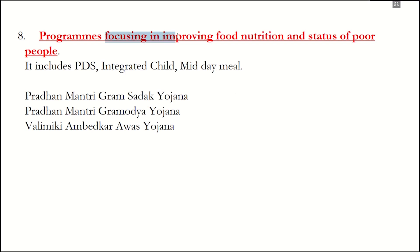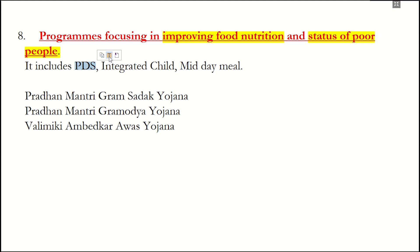There are also programs aimed at improving food, nutrition, and status of people. These include PDS (Public Distribution System), Integrated Child Development Services, and the Midday Meal scheme. Additionally, Pradhan Mantri Gram Sadak Yojana, Pradhan Mantri Gramodaya Yojana, and Valmiki Ambedkar Awas Yojana are also part of these initiatives.